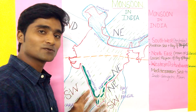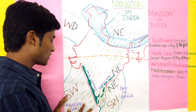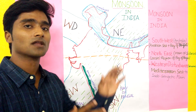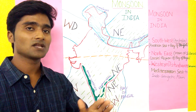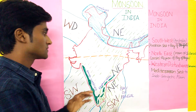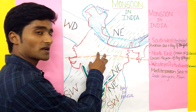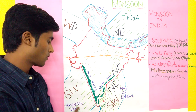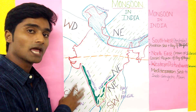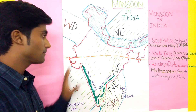This Southwest monsoon gives 60% of the rain to India. Throughout India there is a hot and humid climate in the months of June until August, because the sun is over the Tropic of Cancer. That's why there is hot weather and low pressure over India, and there is moisture from the Arabian Sea, creating high pressure there. Wind flows from high pressure to low pressure.